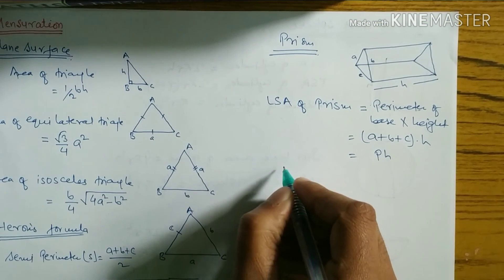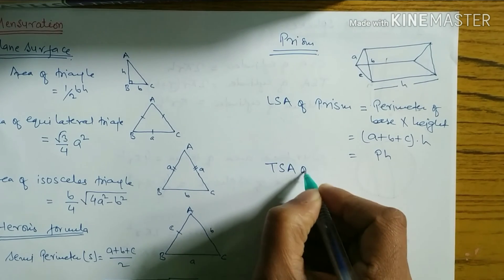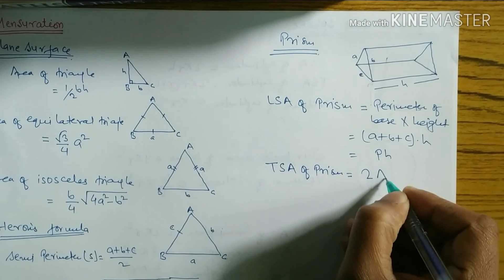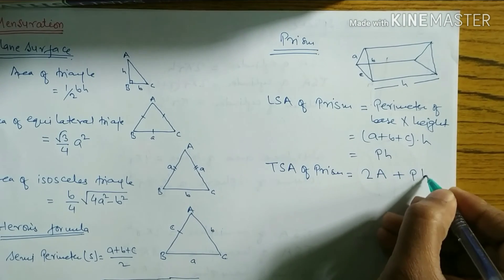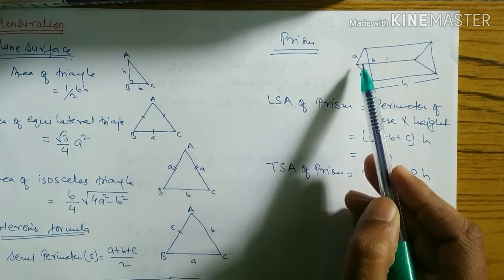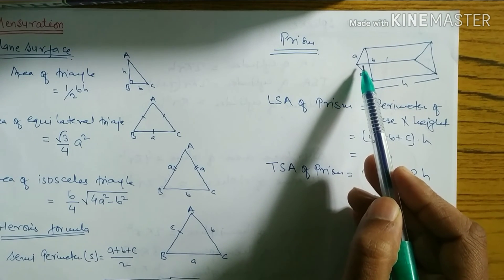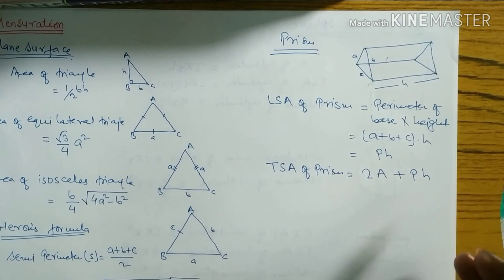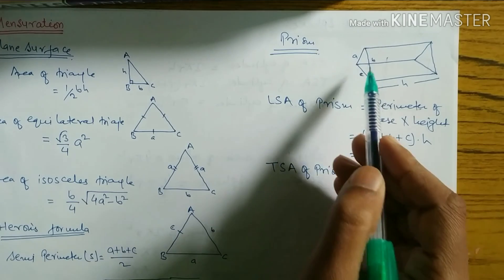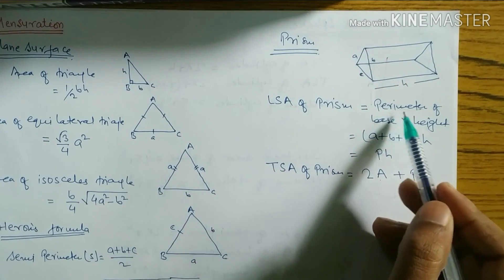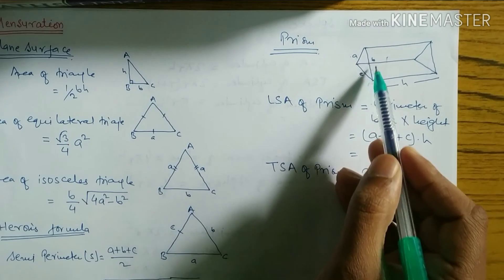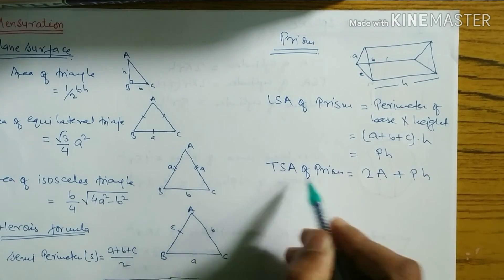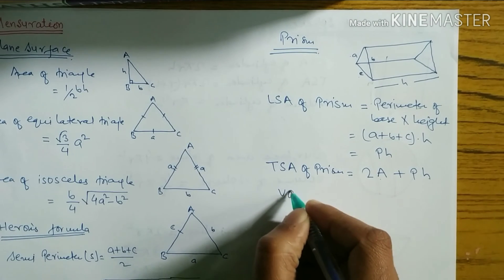The total surface area (TSA) of prism = 2A + Ph, where A means area of base — use equilateral, right angle, or isosceles triangle formula accordingly — P means perimeter of base (a + b + c), and h means height of the prism.